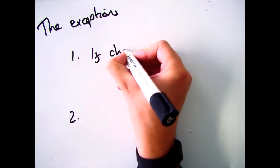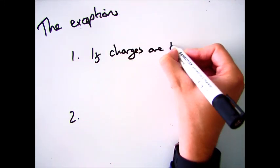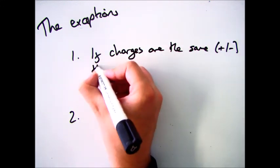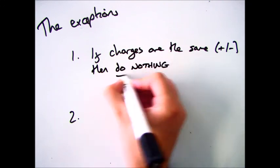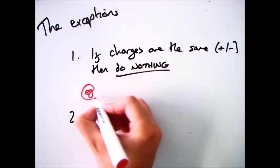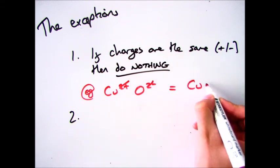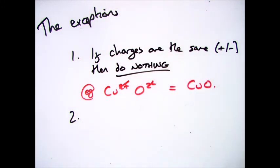However, there are a few exceptions. The first of which being, if the charges are the same, so if you've got 2 plus and 2 minus, or 1 plus and 1 minus, you don't do anything. It's already balanced, therefore that is the formula of your compound. So for example, Cu2+ and O2- cancel each other out, so you have CuO.